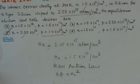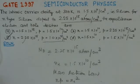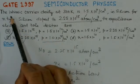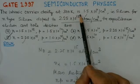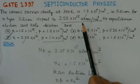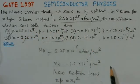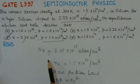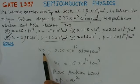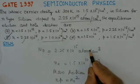Now we take the GATE 1997 problem, which is also of similar nature. The intrinsic carrier density at 300 K is 1.5 × 10^10 per centimeter cube in silicon. For n-type silicon doped to 2.25 × 10^15 atoms per centimeter cube, we need to find the minority carrier concentration. The donor concentration ND is given as 2.25 × 10^15 atoms per centimeter cube.